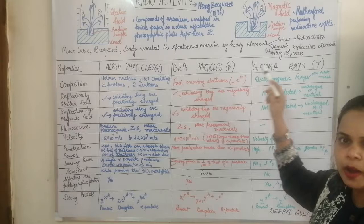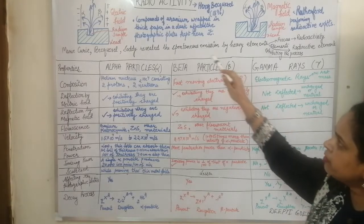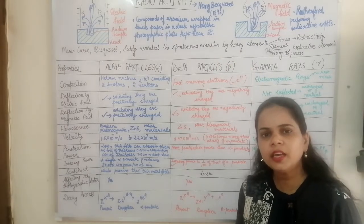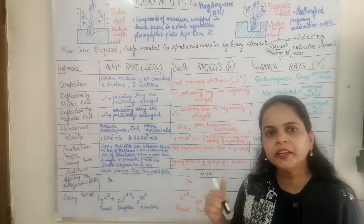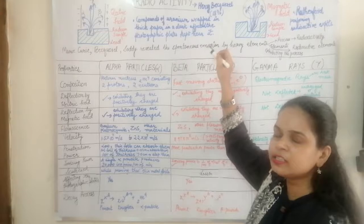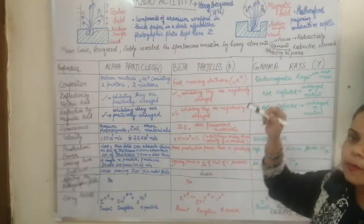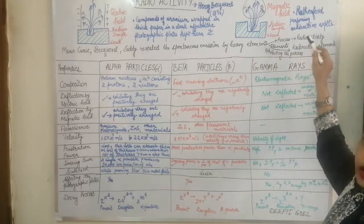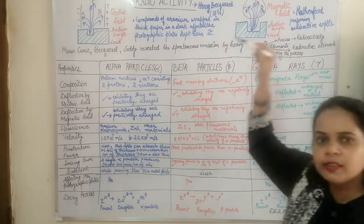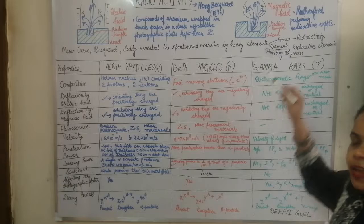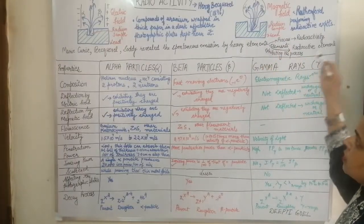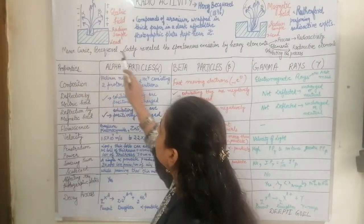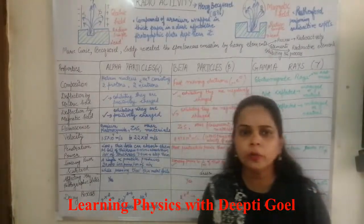These were the properties discussed for alpha, beta, and gamma rays. Radioactivity is defined as the spontaneous emission of radiation by heavy elements — more precisely, elements with mass number greater than 210 — emitting alpha particles, beta particles, and gamma rays. This process was successfully studied by Marie Curie, Becquerel, and Soddy, and Marie Curie received a Nobel Prize for this work.